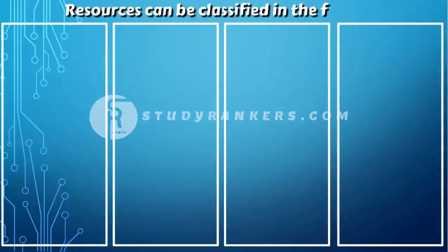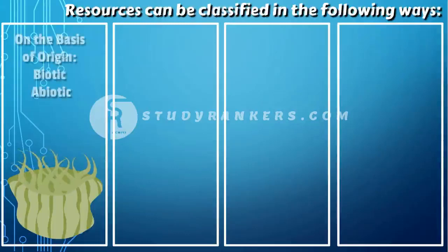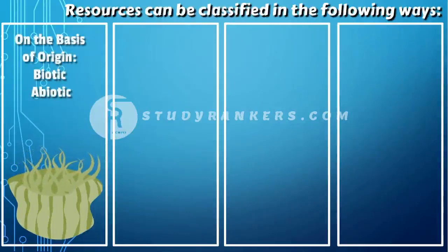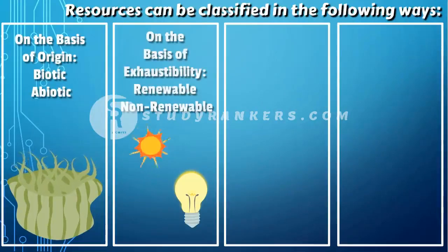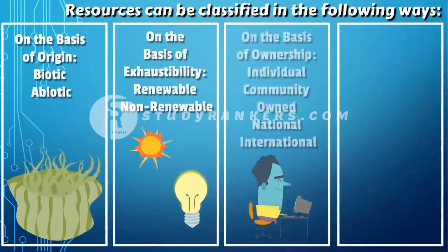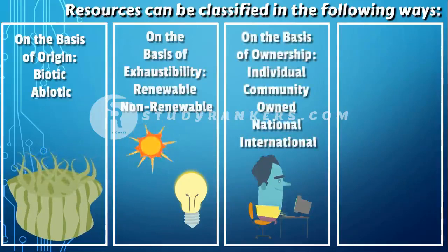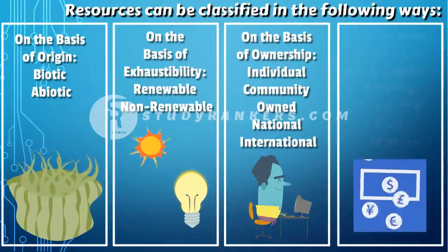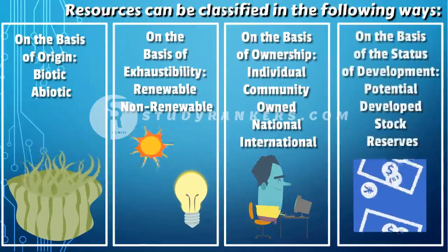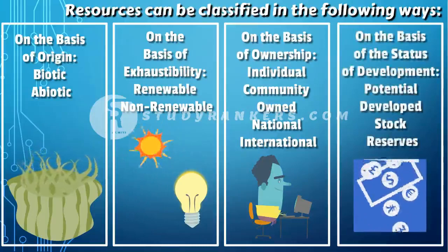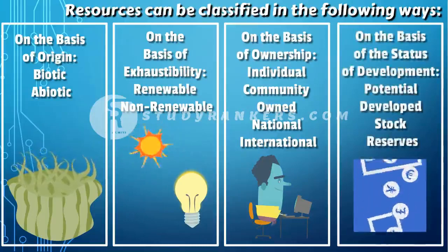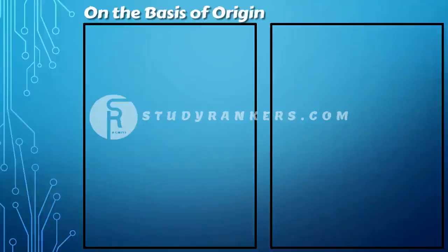Resources can be classified in various ways: on the basis of origin as biotic and abiotic; on the basis of exhaustibility as renewable and non-renewable; on the basis of ownership as individual, community, national and international; and on the basis of status of development as potential, developed, stock and reserves.